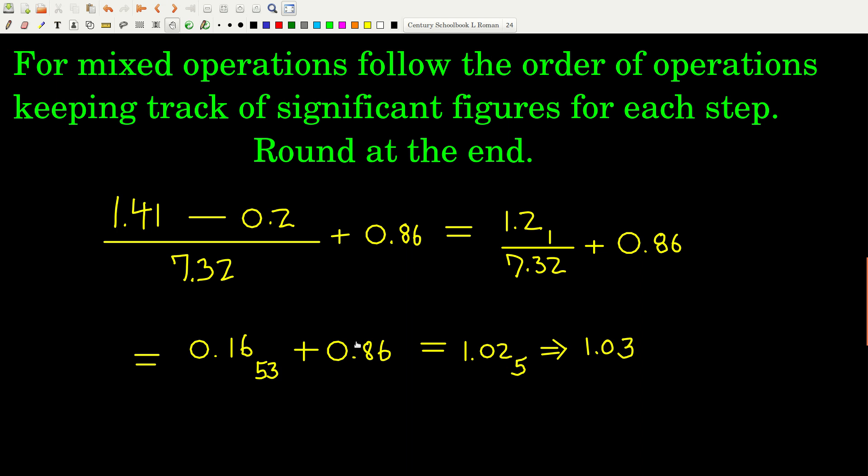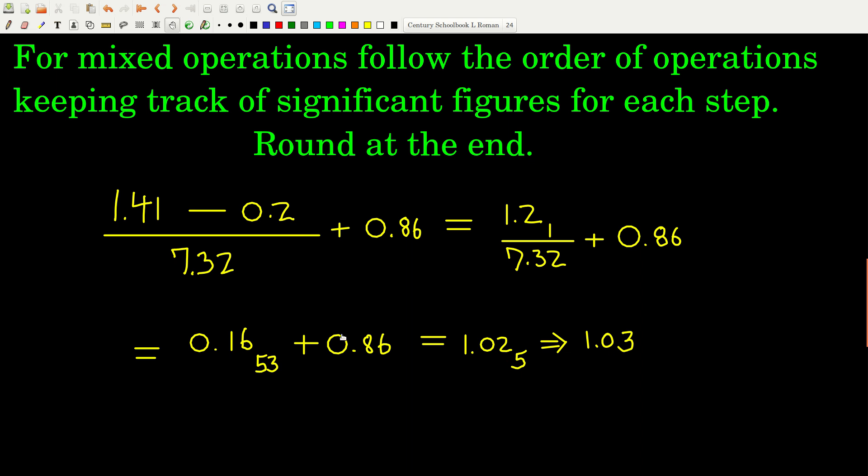So notice, we started out with 3 sig figs, 1 sig fig, and 3, and we ended up with 3. There's no connection between there being 3 here and 3 here. That's just chance. And notice also that you can't just look at the sig figs before you start and figure out how many there's going to be in the answer. You really have to do each step one step at a time and keep track of sig figs during each step. If you do that, you'll be fine.